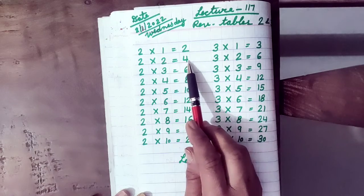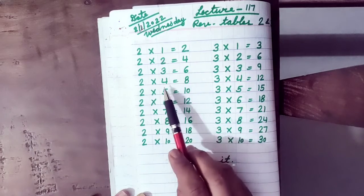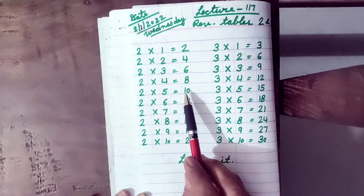2 ones are 2, 2 twos are 4, 2 threes are 6, 2 fours are 8, 2 fives are 10.